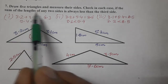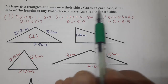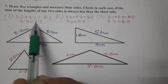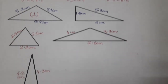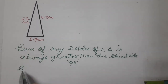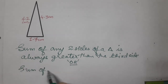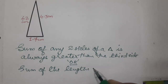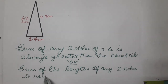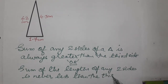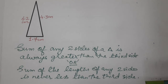The question asks us to check if the sum of the length of any two sides is always less than the third side. But we found that the sum is always greater, not less. So we write: the sum of the length of any two sides is never less than the third side. In every case, it is not possible that the sum of the length of two sides is less than the third side.